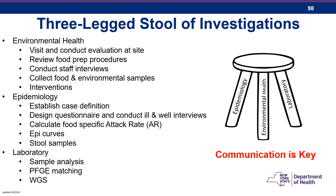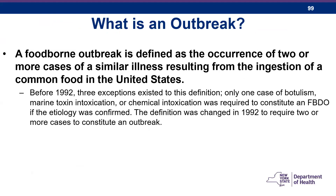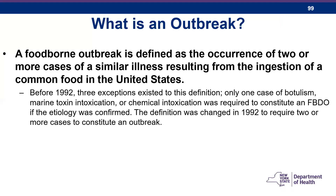The main thing is communication is key — we want to make sure that everyone is communicating with each other. The definition of an outbreak is defined as the occurrence of two or more illnesses resulting from the ingestion of a common food in the United States. Back in 1992, there were three exceptions to this definition — a single case of toxin intoxication or chemical intoxication, such as botulism, was considered an outbreak. But that definition changed in 1992, so we now need two or more cases.